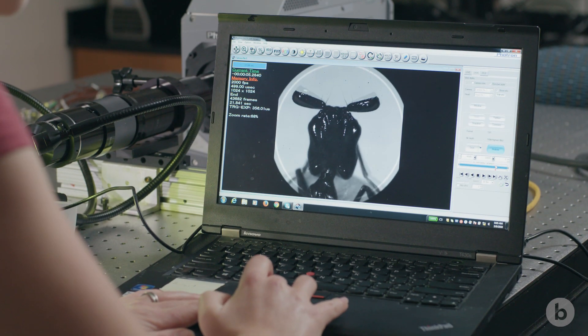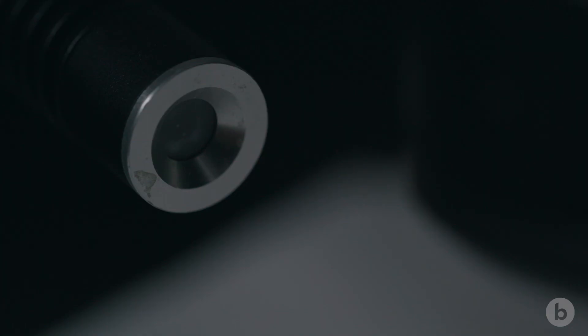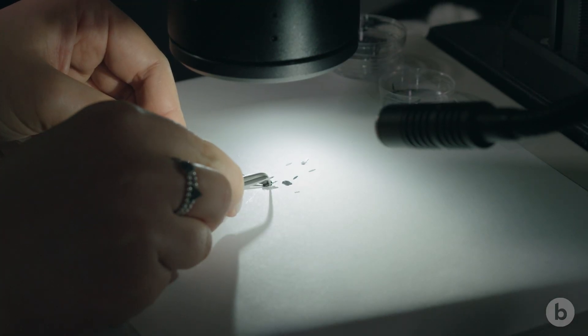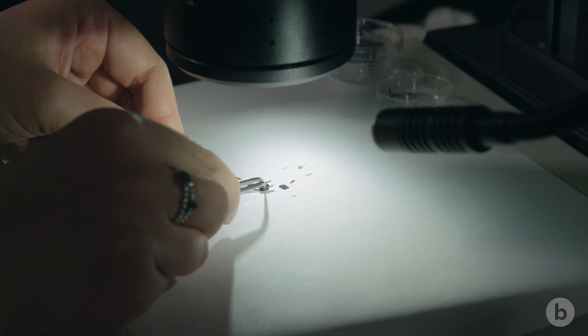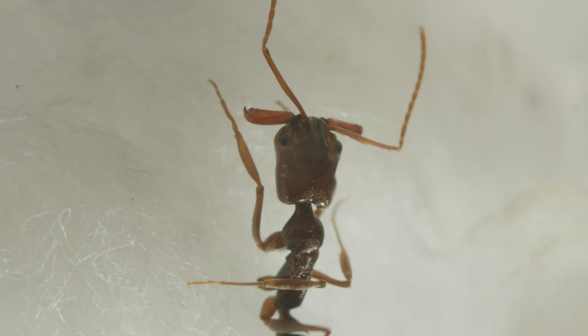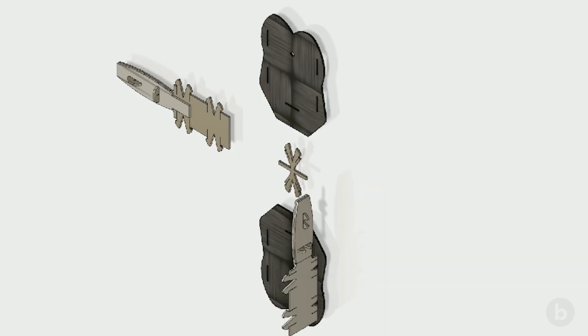When Zeynep came in and was looking at the trap jaw ant morphology, she pointed out things that didn't make sense to her that we hadn't even thought about as biologists. Zeynep worked a really long time to build a physical model that matched what the literature says about how the latch works in ants. And she couldn't do it. It just didn't work right.